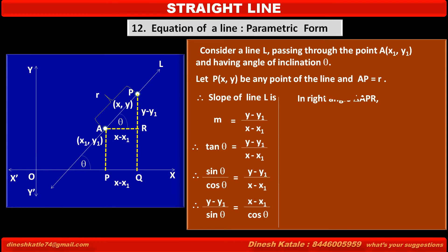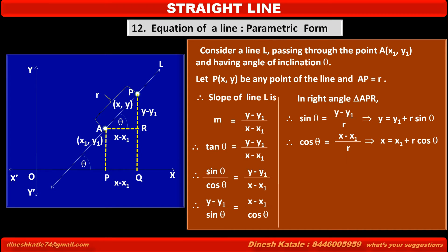In right angle triangle APR, sin theta equals (y minus y1) upon r — opposite side upon hypotenuse — which implies y equals y1 plus r·sin theta. Therefore cos theta equals (x minus x1) upon r — adjacent side upon hypotenuse — which implies x equals x1 plus r·cos theta.